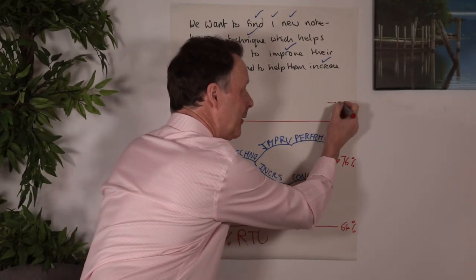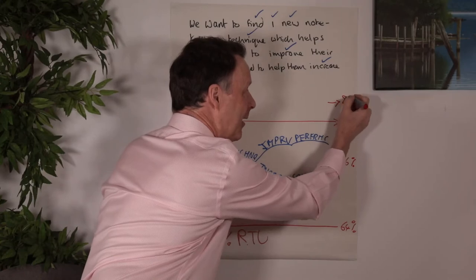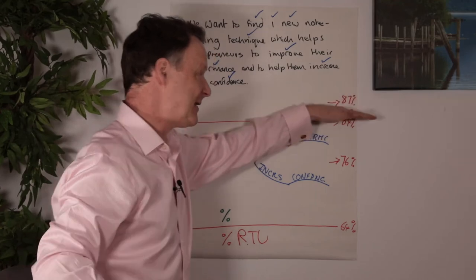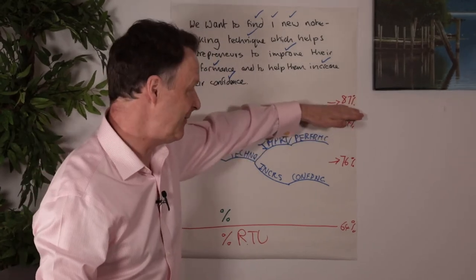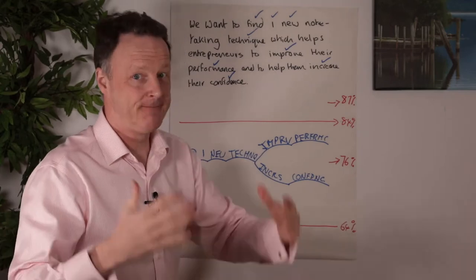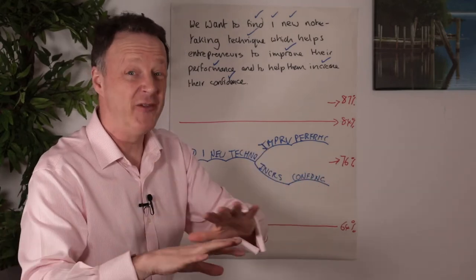But it gets better still. For people who are dyslexic and I'm dyslexic and a lot of entrepreneurs are dyslexic, our real time understanding goes up to 87%. So that gives us a 23% advantage over people who aren't even dyslexic.